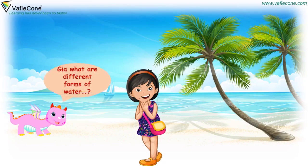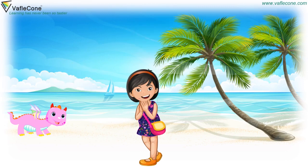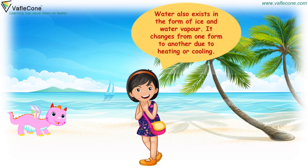Jiya, what are the different forms of water? Dodo! Almost three-fourth part of the earth's surface is covered with water. Water also exists in the form of ice and water vapour. It changes from one form to another due to heating or cooling.